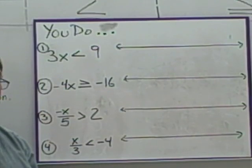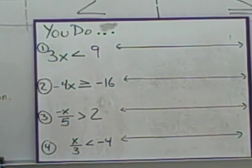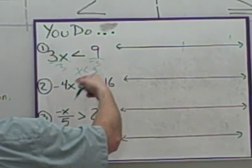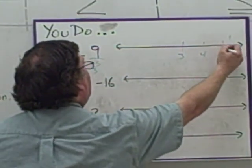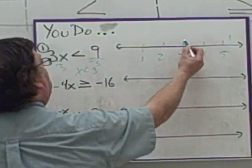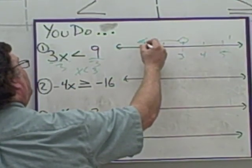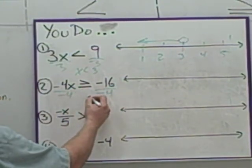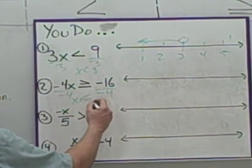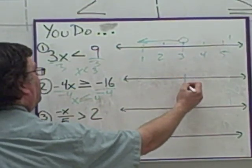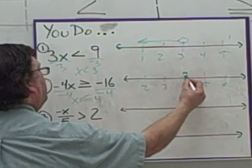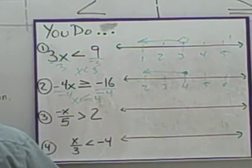Here are four examples — pause the video and give it a try. Welcome back. First: dividing by three, we get x is less than three. No flipping — it wasn't divided by a negative. Open circle over the three, going in the less-than direction. Second: dividing by negative four, since we're dividing by a negative, we flip the inequality — greater than becomes less than or equal to. Negative divided by negative is positive, giving us positive four. Closed circle above the four, heading in the less-than direction.